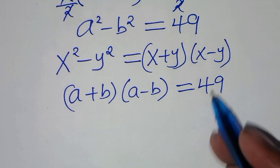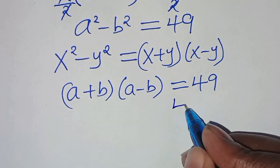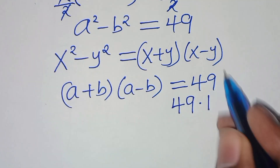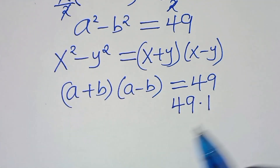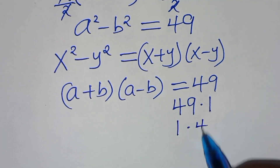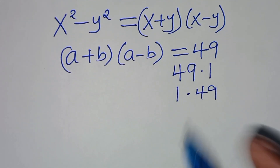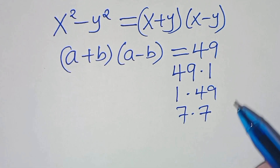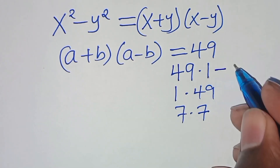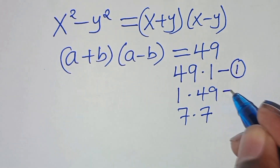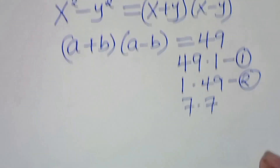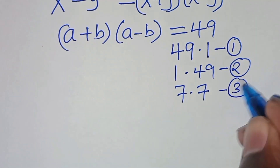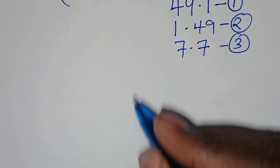The next step is to express 49 by finding its factor pairs. We have 49 × 1, which gives 49; 1 × 49; and 7 × 7, which also gives 49. So in this case we have three cases to consider.